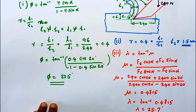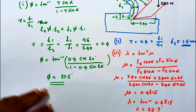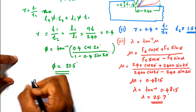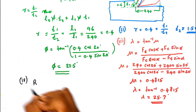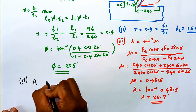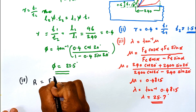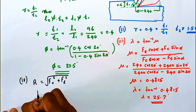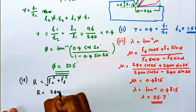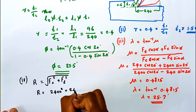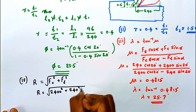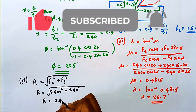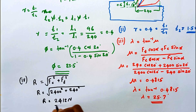For the fourth part, we find the resultant cutting force R. R equals the square root of the cutting force squared plus the thrust force squared: R equals √(2400² + 240²), giving R equals 2412 N as the resultant force.